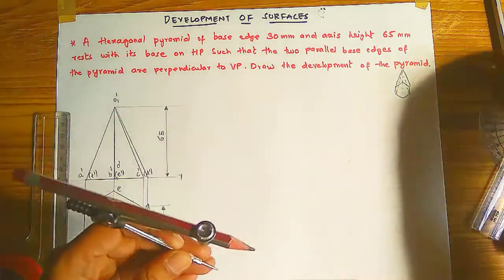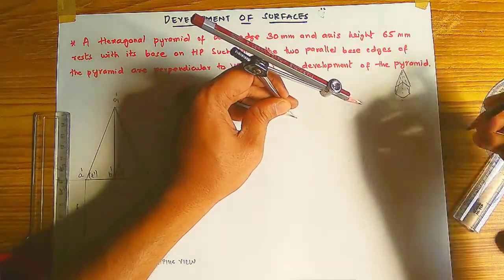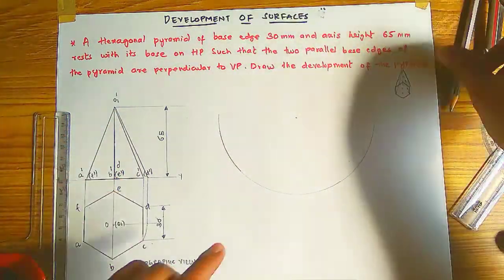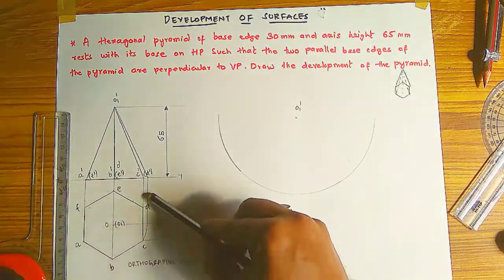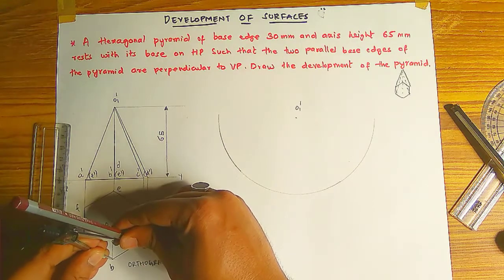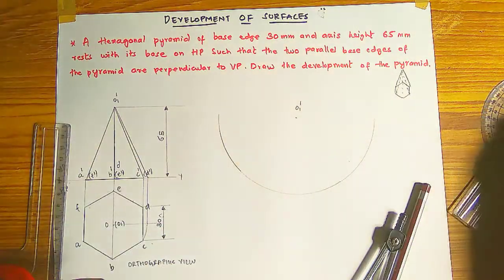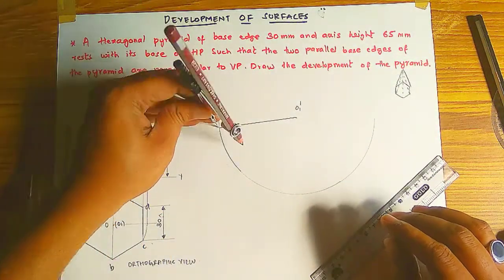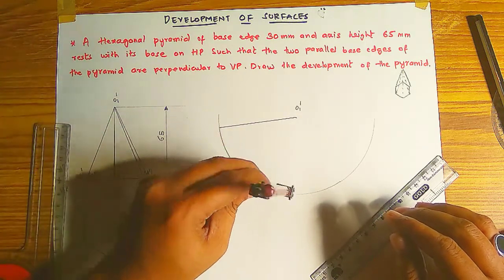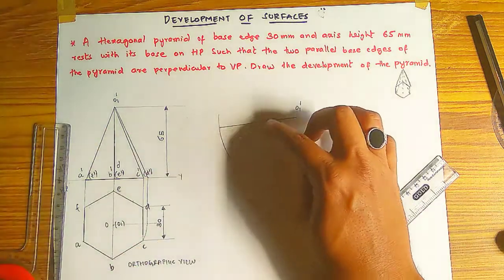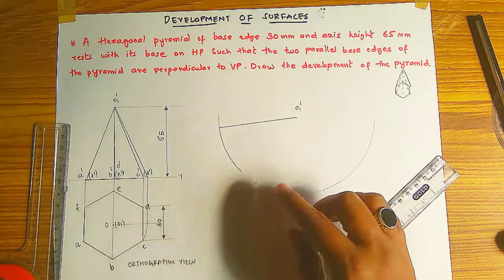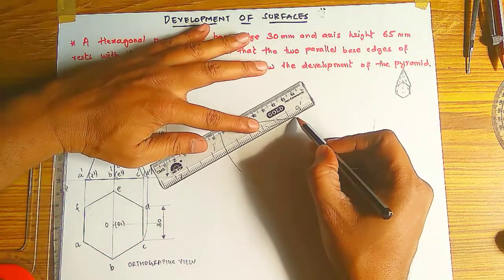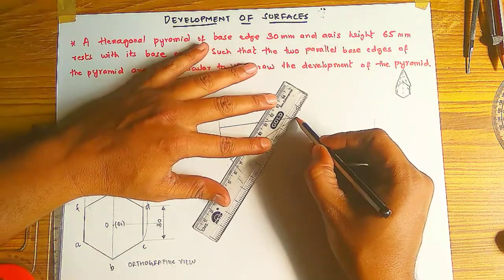With this true length, we construct the development of the surface. Measure the true length distance and mark a point anywhere on the paper — this will be O1 dash. Draw an arc with the true length as radius. The hexagon has 6 sides, so the base edge is 30mm. Draw a line from O1 dash, then step off 30mm arcs six times around the large arc to get 6 triangular faces. Join each arc point back to O1 dash.